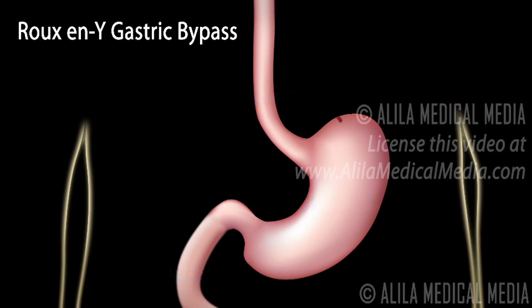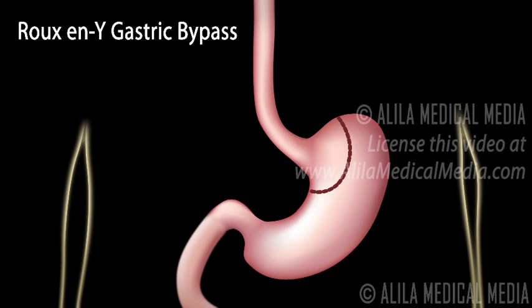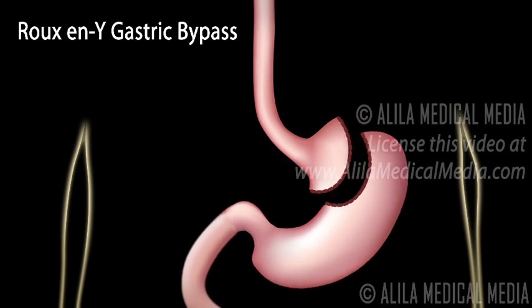The stomach is divided into two parts: one small pouch at the top of the stomach where it is connected to the esophagus, and the rest of the stomach which will be bypassed. The two parts are separated and stapled.